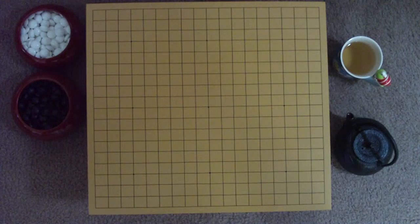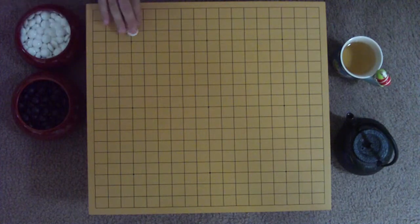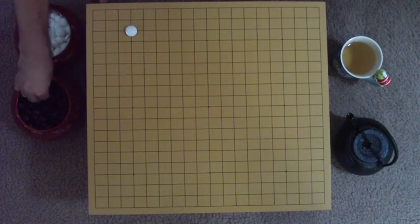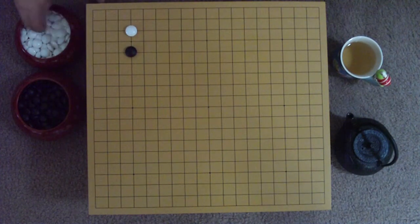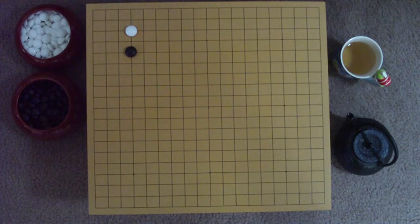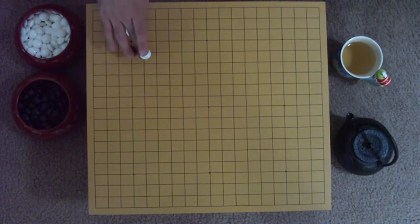When Black makes the one-point approach on White's 3-4 opening, as we've seen, White often likes to press up against the invader. However, instead of contacting on the inside of Black's stone, White can also make contact on the outside.